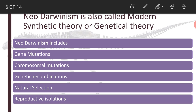Genetic recombinations are the raw materials for evolution, occurring only in sexual reproduction. In sexual reproduction, one set of chromosomes comes from the maternal side and another from the paternal side. These paternal and maternal chromosomes exchange certain fragments with each other during the process of crossing over, which is a source of variations. Reproductive isolations, followed by geographical or spatial isolations, ultimately result in the formation of new species.